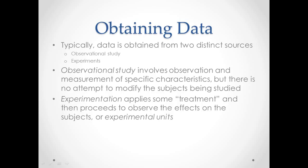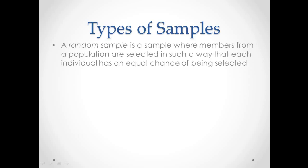Let's take a look at some types of sampling. First, a random sample: any sample where the members of the population are being selected in such a way that every person has an equal chance of being selected.